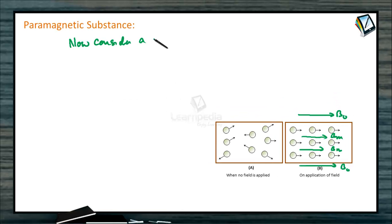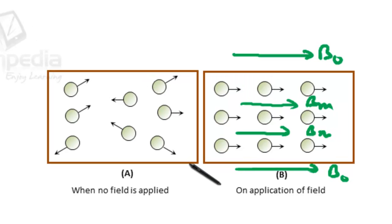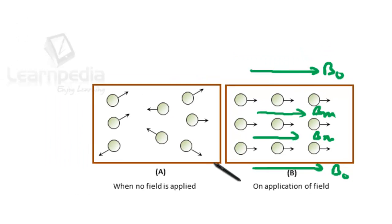In these substances, the inner orbits of the atoms are incomplete and electron spins are uncoupled. Consequently, on applying a magnetic field, the magnetic moment generated due to spin motion aligns in the direction of the field, inducing magnetic moment in its direction, due to which the material gets feeably magnetized. In these substances, the electron number is odd.